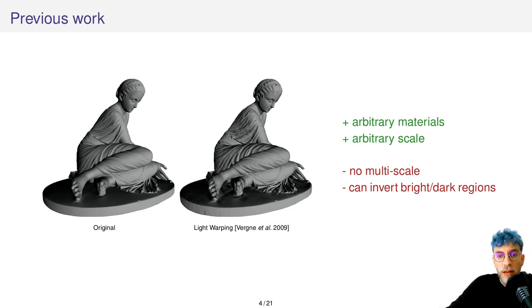In 2009, light warping proposed by Vergne and colleagues solved this issue by enabling enhancement for arbitrary materials. Enhancements can be done at arbitrary scales but not at multiple scales. Also, in some configurations it can invert bright and dark patterns, which is of course something you do not want.